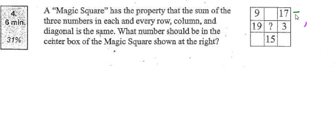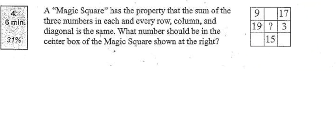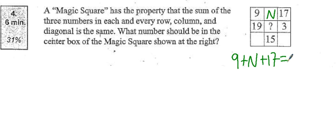We know that if we add this way, this way, this way — every single direction — all these sums have to equal the same thing. So here's the easiest way to solve this quickly. I can put in a letter or a variable in this square here, so that I know that 9 plus n plus 17 equals something.